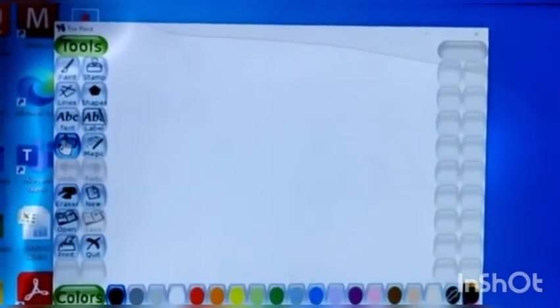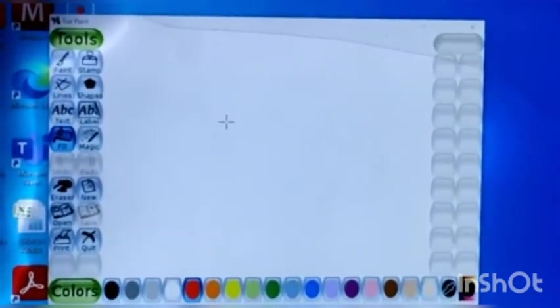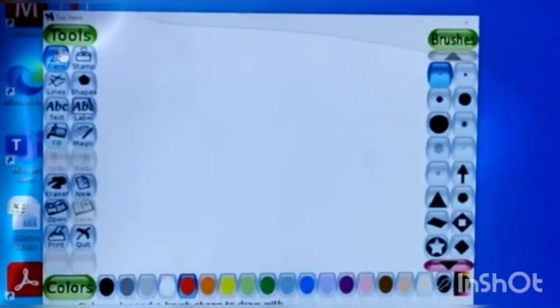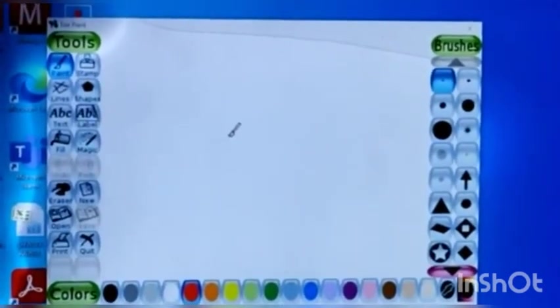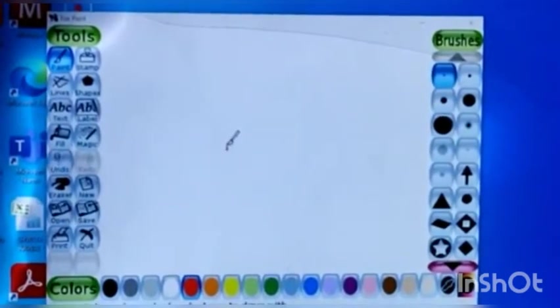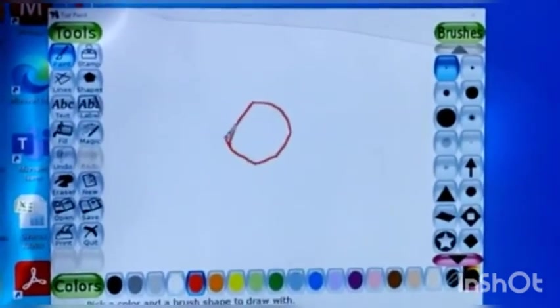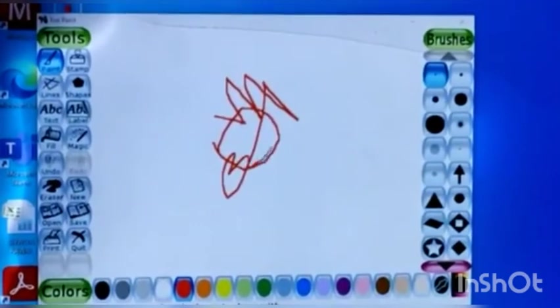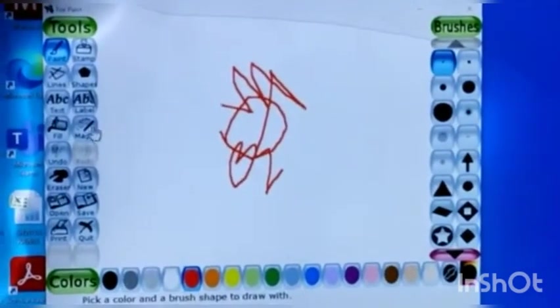Suppose you have drawn something. Let's draw. We can see that we are drawing something. We took the paint tool and we will draw. And we want to erase it. It is not beautiful and we want to erase it.